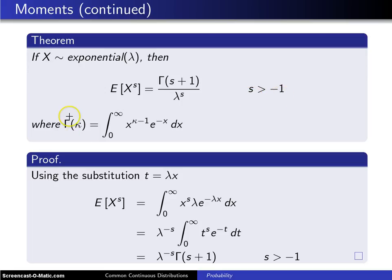This gamma function is defined as the integral from zero to infinity of x to the kappa minus one e to the minus x dx. It has a single parameter kappa.